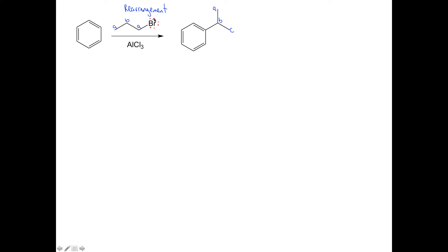So first thing I'm going to do is draw in my lone pairs on my bromine. We'll go through the first step of the mechanism. That bromine will attack our aluminum species, which is a Lewis acid.